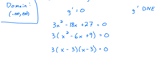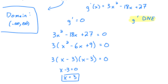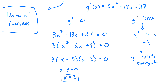Taking each factor and setting it equal to 0: x minus 3 equals 0 gives x equals 3. The second factor gives the exact same thing, so we have x equals 3 as our critical number. The other case to think about is places where the derivative does not exist. Since g prime is a polynomial, g prime exists everywhere, meaning there are no x values where g prime does not exist. So we only have the one critical number: x equals 3.